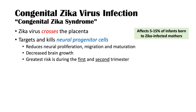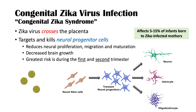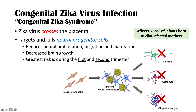Congenital Zika syndrome affects approximately 5 to 15% of infants born to Zika-infected mothers — roughly 1 in 10 babies. The virus infects and destroys neural progenitor cells, which normally differentiate into neurons, astrocytes, and oligodendrocytes. Astrocytes and oligodendrocytes are glial cells that support neurons; loss of all these cell types leads to significantly reduced brain tissue.